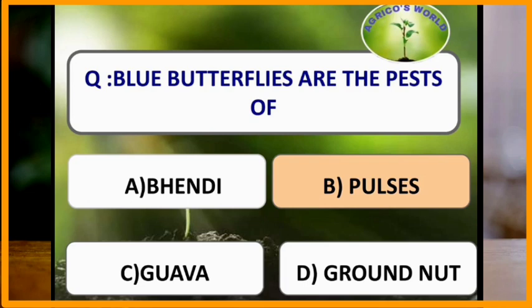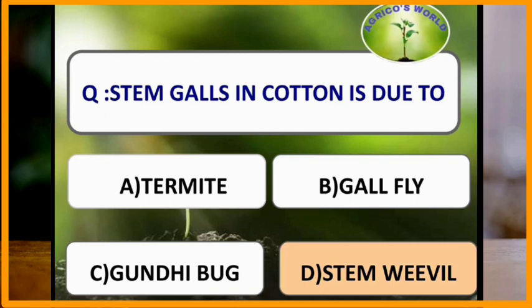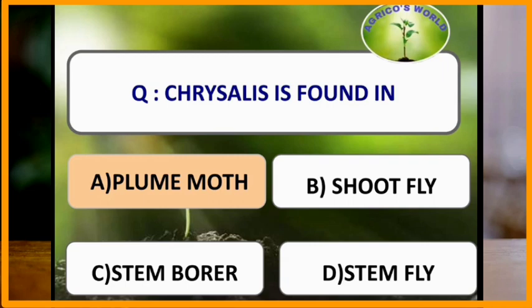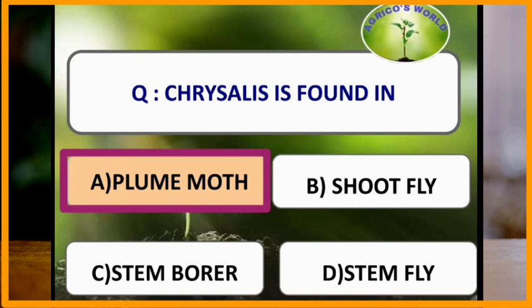Blue butterflies are pests of pulses. Stem gall in cotton is due to the attack of stem weevil. Chrysalis is found in plume moth.